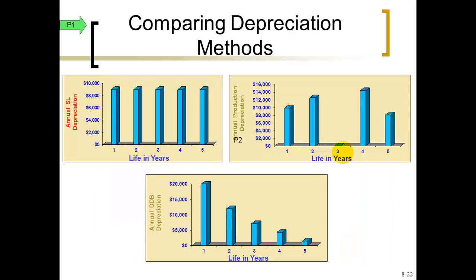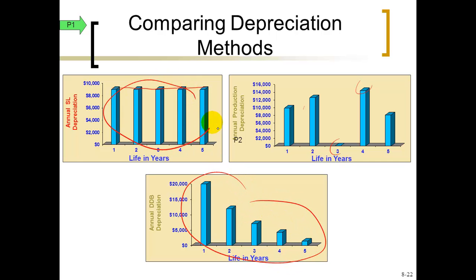Graphically comparing the three methods: straight-line gives the same depreciation amount every full year; units of production jumps up and down depending on how much work was done; declining balance starts high and decreases to very small amounts in later years. But if you add up all the depreciation across all years for any method, the total is the same — equal to the total depreciable cost.